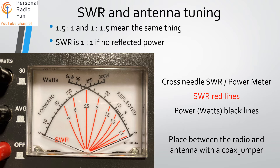Let's look at a meter used to show the standing wave ratio. You can say it either way — 1.5 to 1 is the same as 1 to 1.5. An SWR of 1 to 1 means there is no reflected power. The picture shows a cross-needle SWR and power meter. The red lines on the meter indicate SWR, and the black items indicate power.